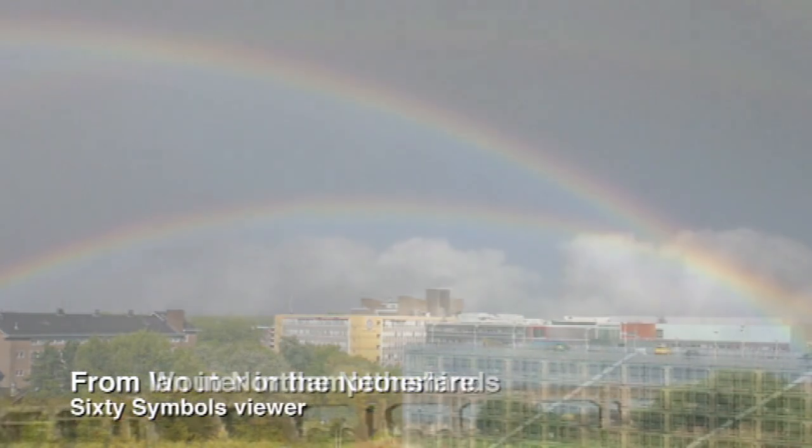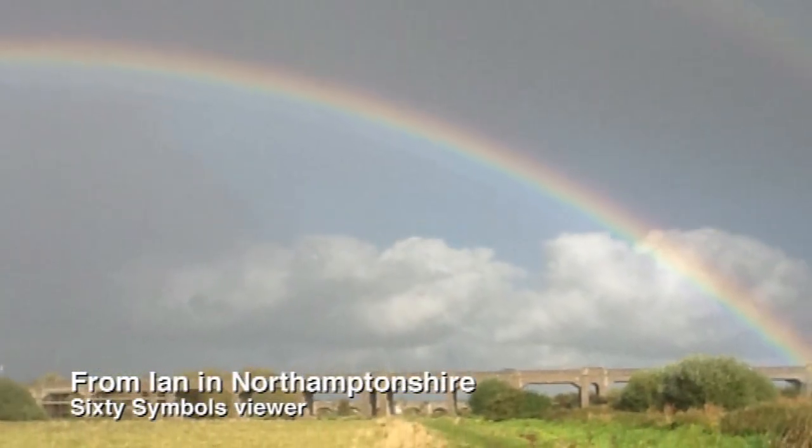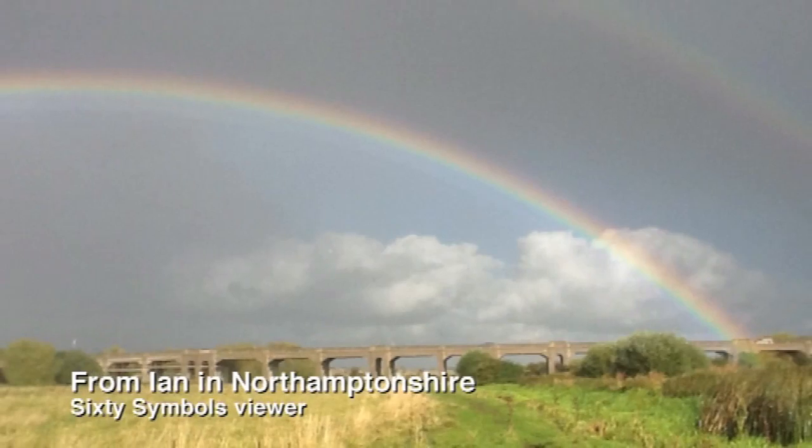So it is actually always there, and in fact very occasionally you can even see a third rainbow, which is even fainter still. So these other rainbows are always still there, but they're always much fainter, so if you can only just see the primary rainbow you're not going to see the secondary rainbow at all. And it's always when you have a really stonkingly bright primary rainbow that you end up seeing the secondary one.